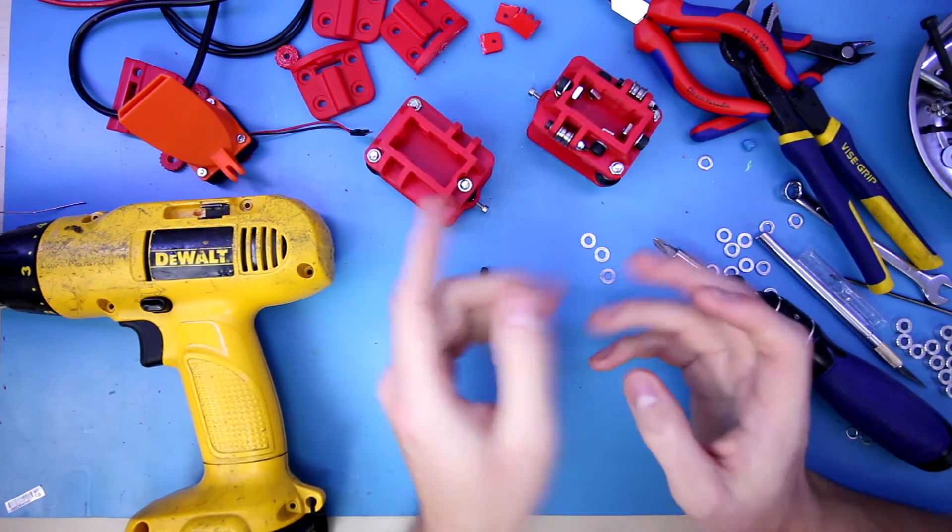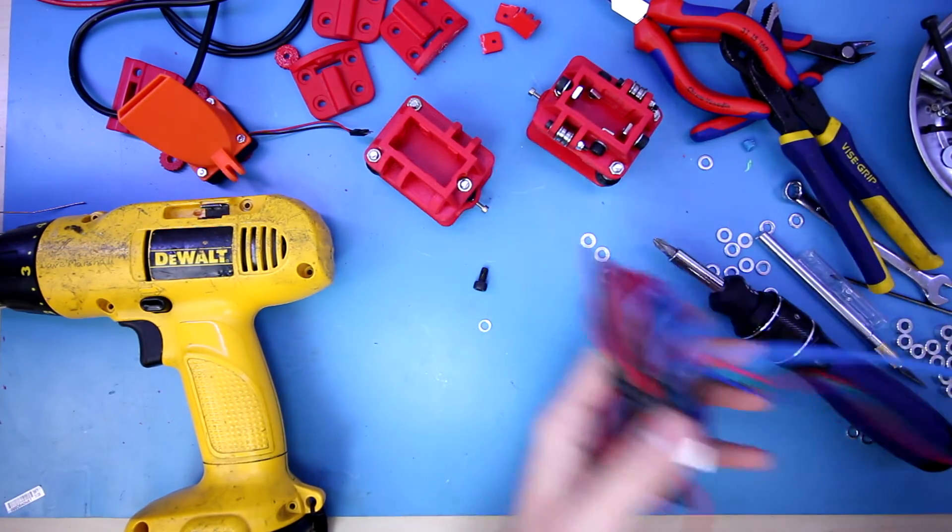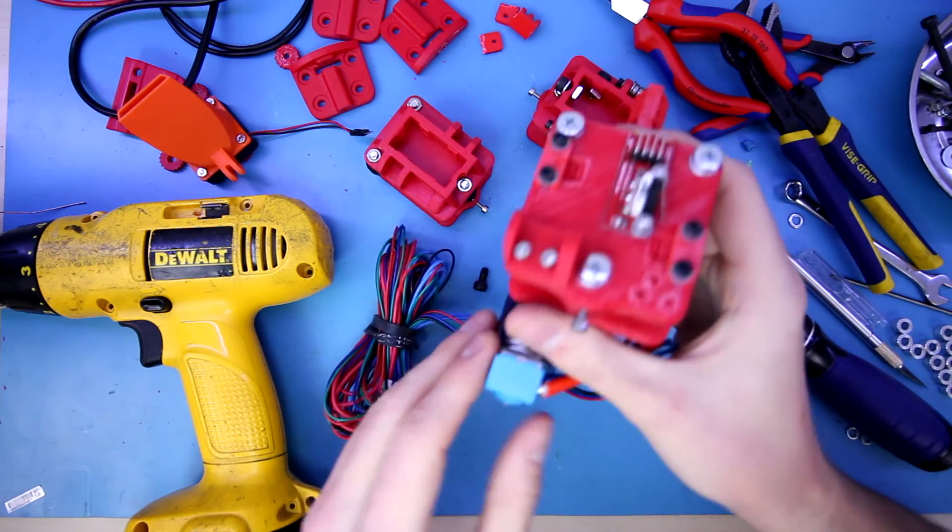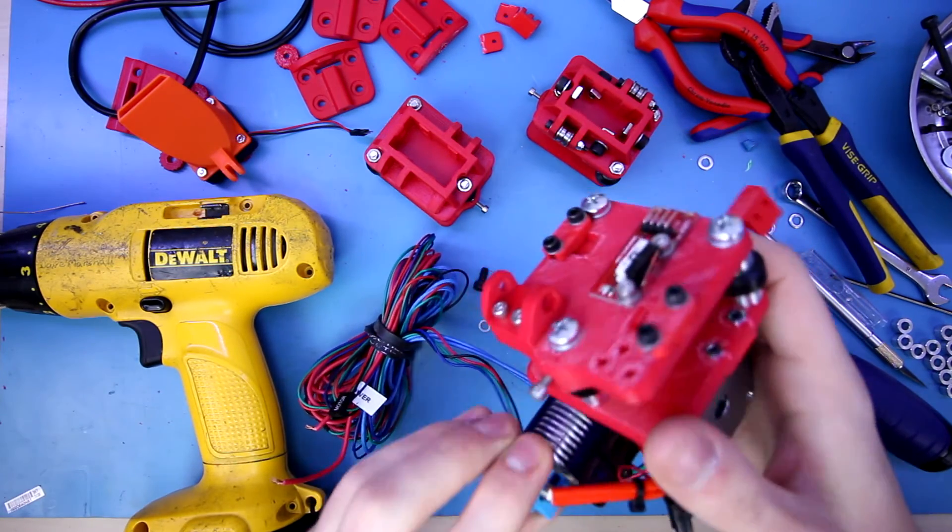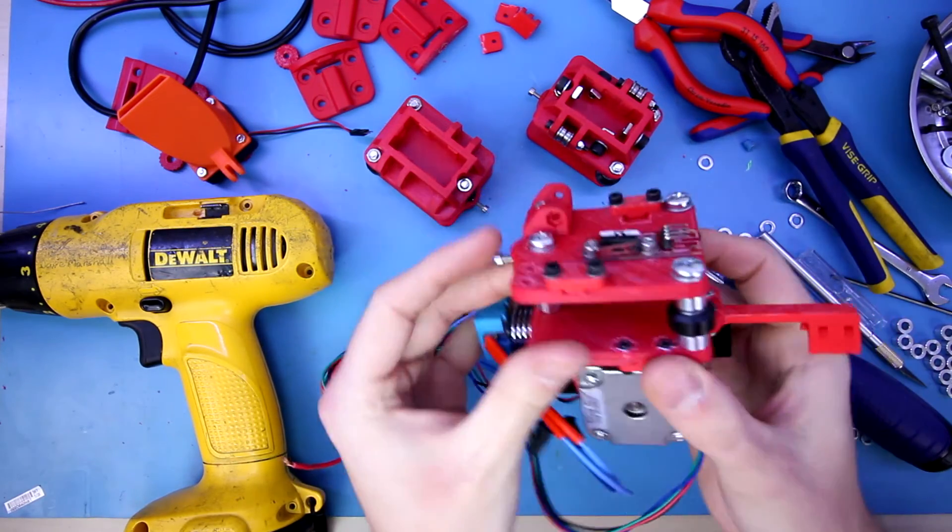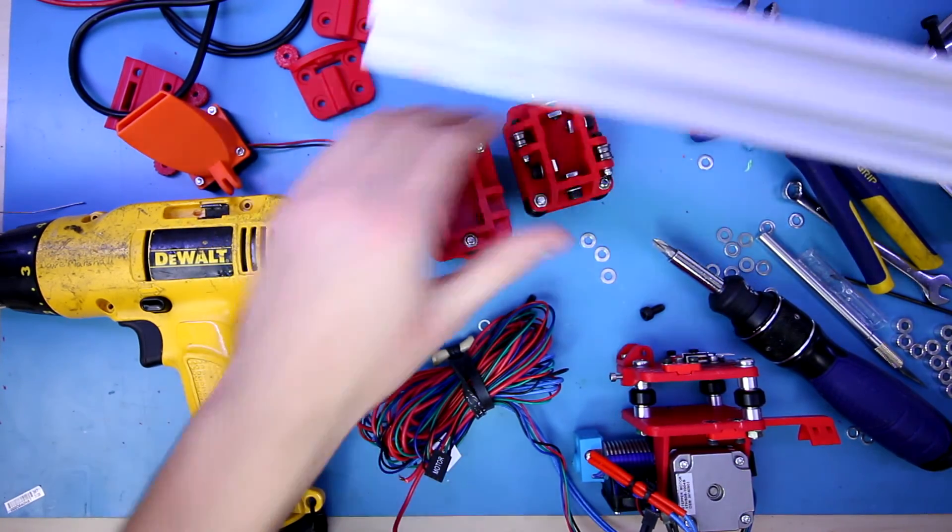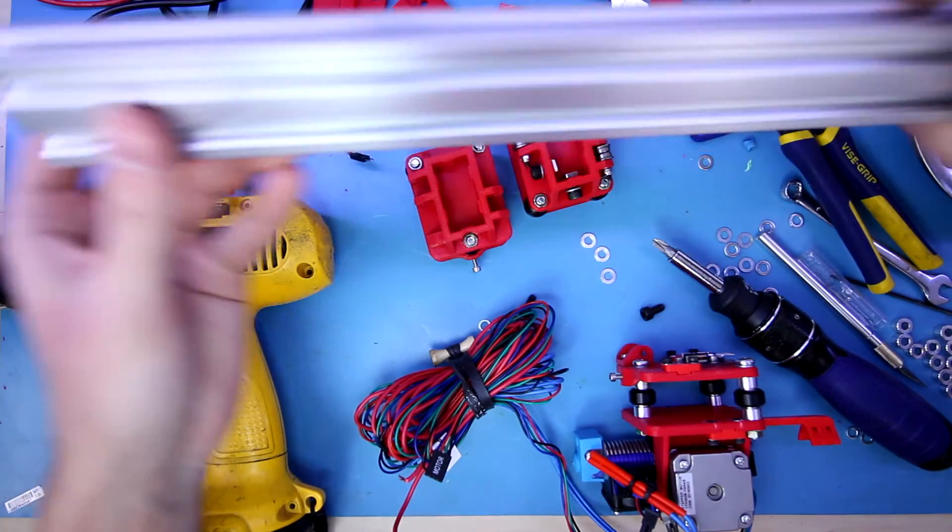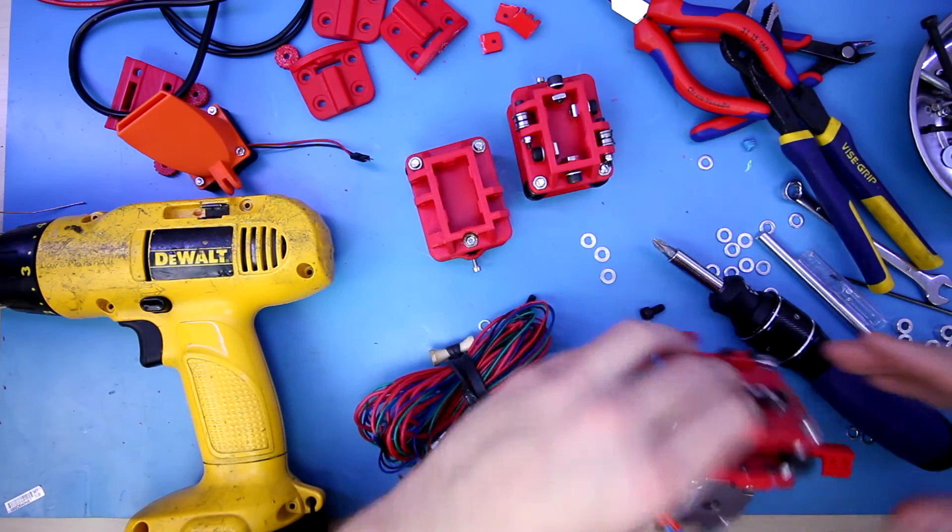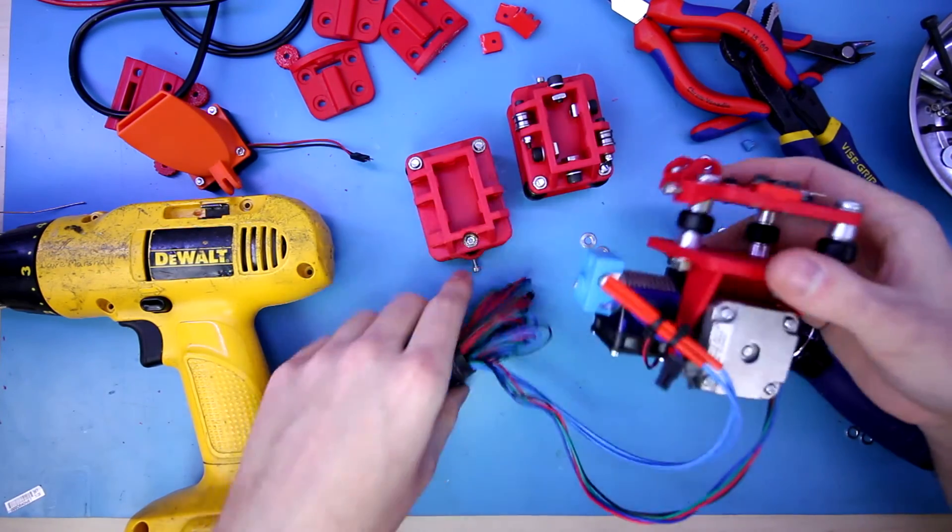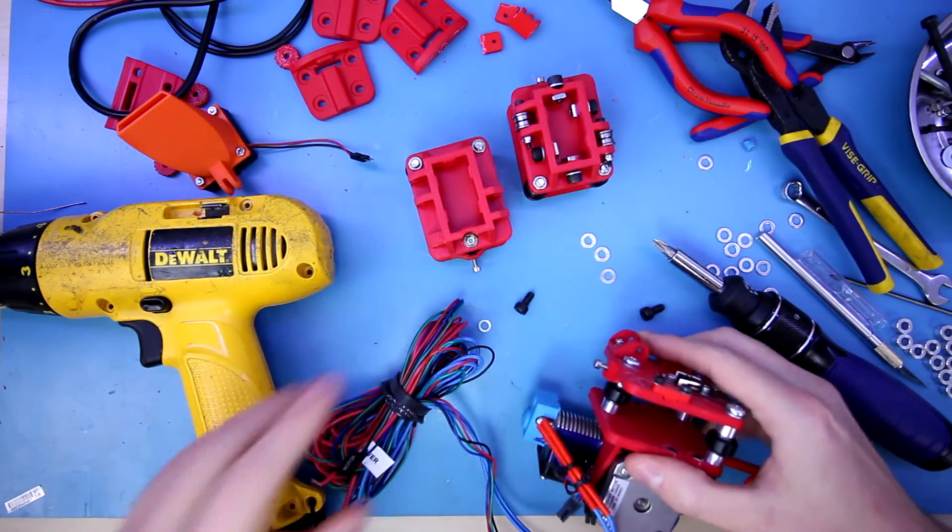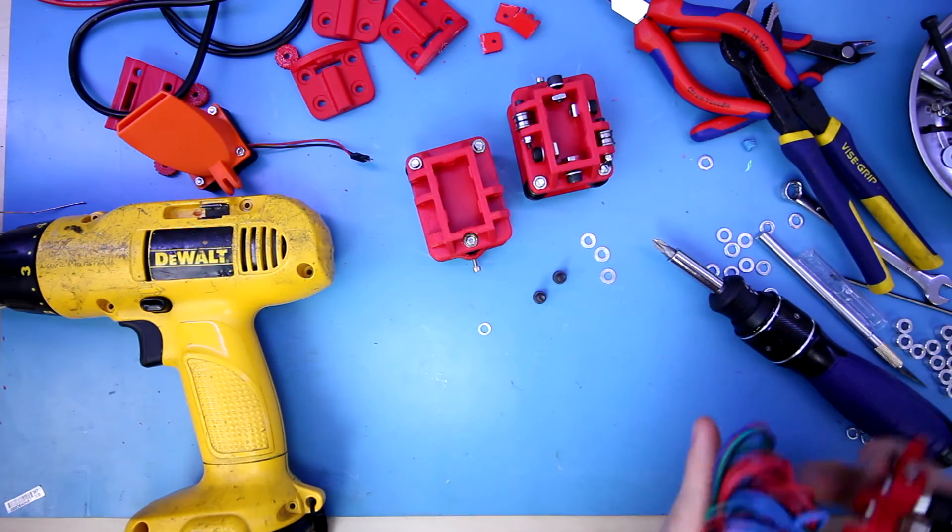Just to recap what we did: we finished our extruder assembly and the extruder hot end assembly, and that is all good to go. We have the H bar bearings or of course rollers along with everything here taken care of. Everything is pretty much wired up and ready to go, just need to plug and play it essentially. That's pretty much all we've done in today's episode here.